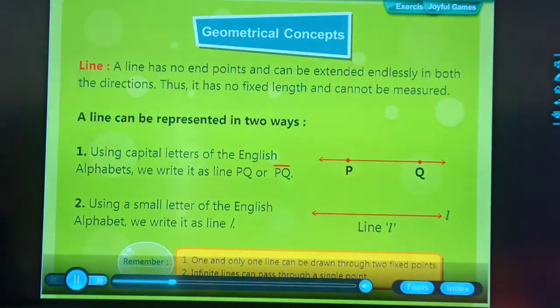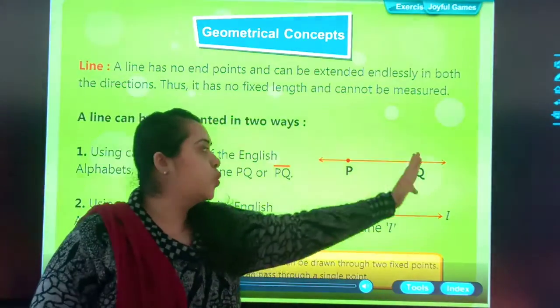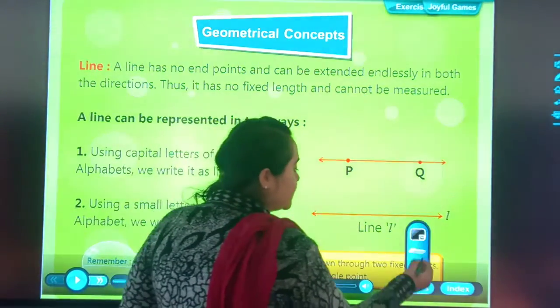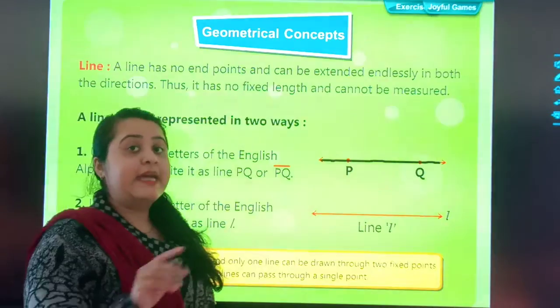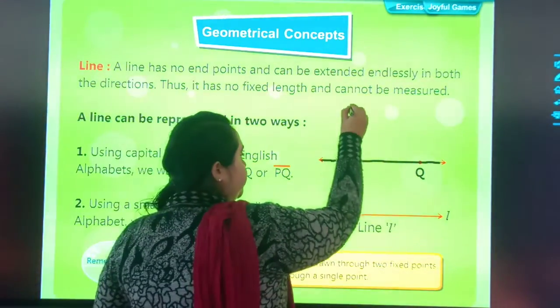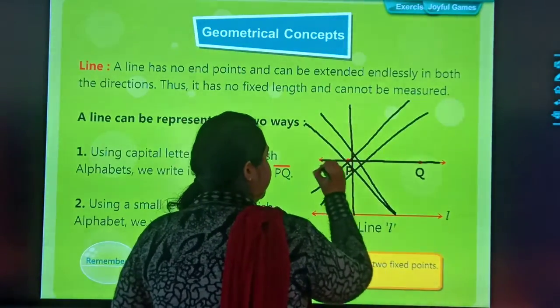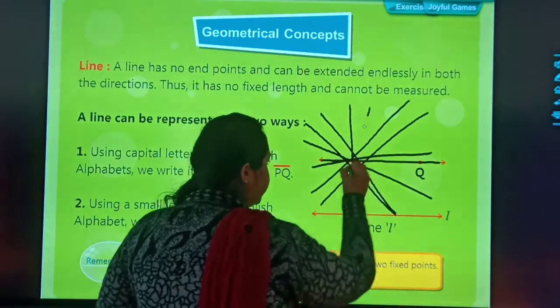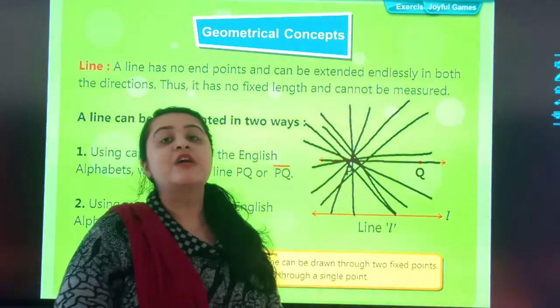Remember, one and only one line can be drawn through two fixed points. Infinite lines can pass through a single point. So only one single line can be drawn between two points. I can draw a single line between two points. But infinite lines can pass through one single point. Okay students. See. One, two, three, four, five, six, seven, eight, nine. So many lines can pass through a single point.